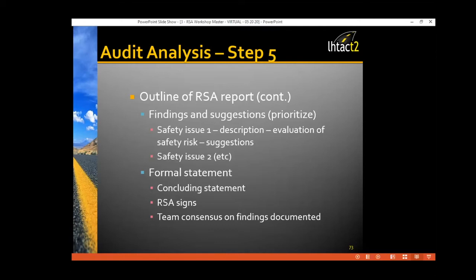The RSA team leader should not demand specific corrective measures — they are laying out the issues. It will be up to the project owner and, if the project is being designed, the design team, to review the safety issue and determine what the appropriate fixes might be. The purpose of the RSA team is not to design the project; they're there to identify safety issues with a level of risk. If the owner believes it has merit, it will be up to the owner and design team to design the fixes.